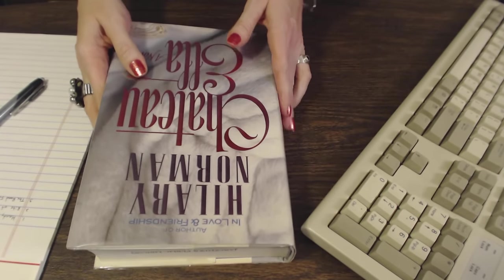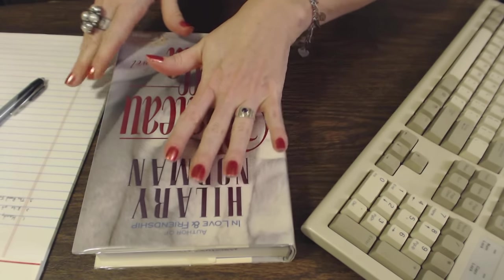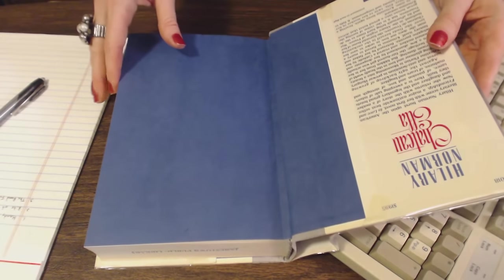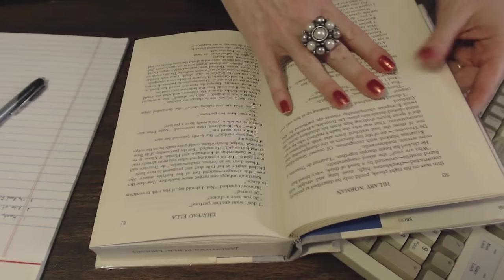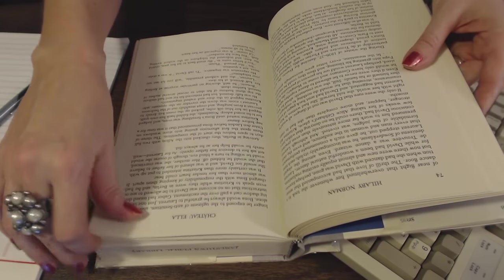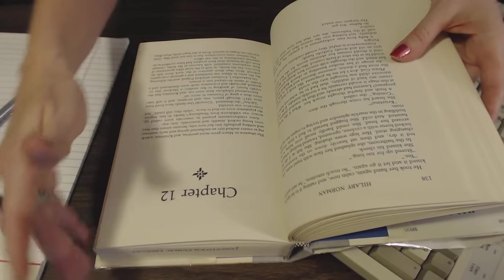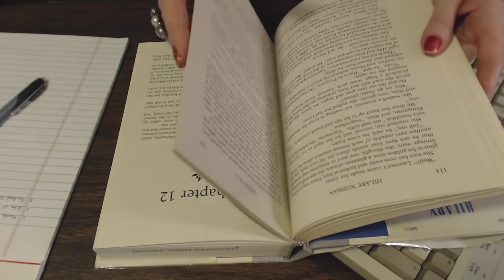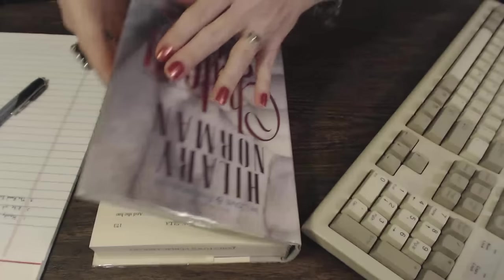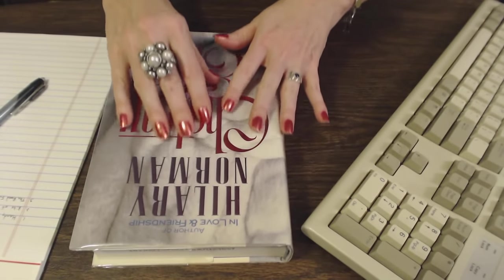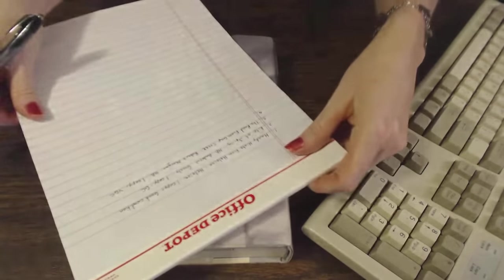And this will be number four, we have Hilary Norman, Chateau Ella, which is a novel, the author of In Love and Friendship. This was returned today to the library. Looks good, no marks, no turn down pages. No blemishes on the outside of the pages.